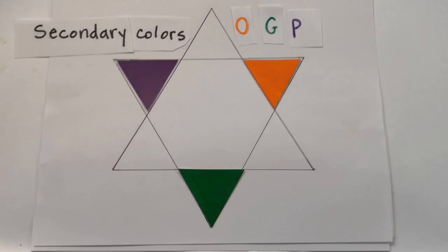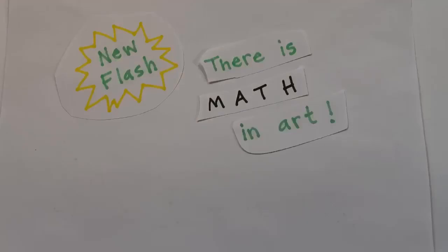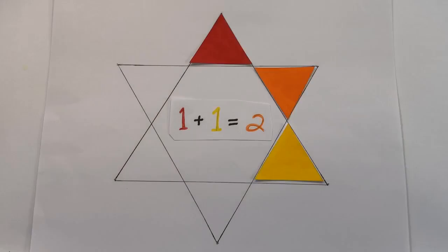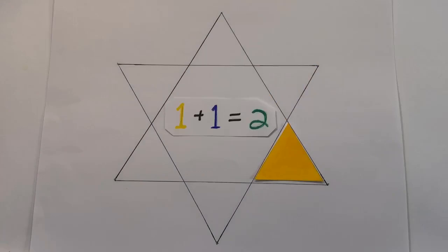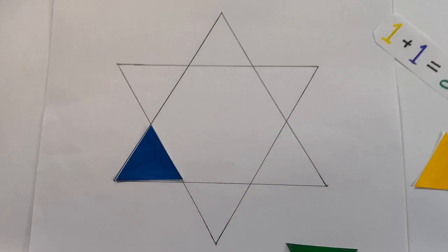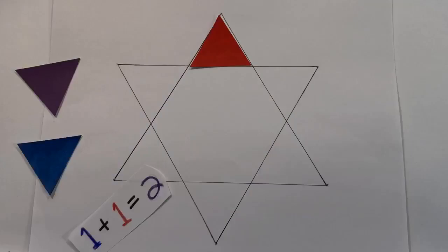Secondary colors, orange, green and purple come second. There is a little bit of math in art. Primary red plus primary yellow equals secondary orange. A primary plus a primary equals a secondary. Blue plus red equals secondary purple.